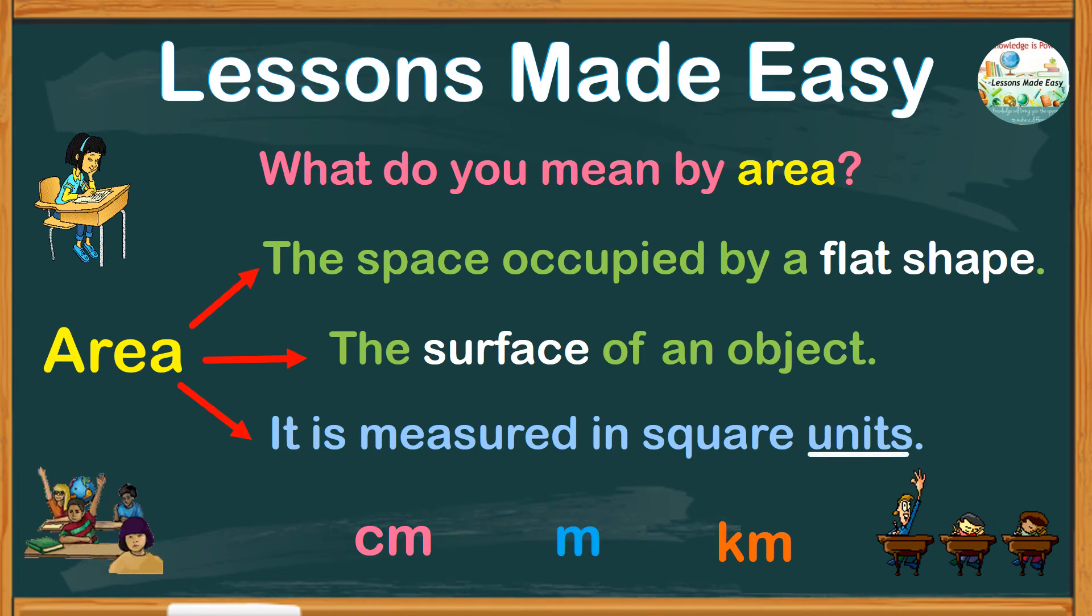And when we say square units, this means they are being used twice. That's why you see the exponent 2, and this can be read as square centimeters, square meters, and square kilometers.